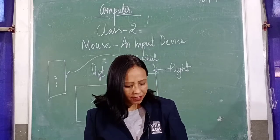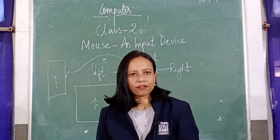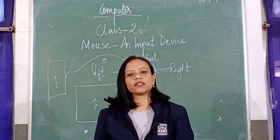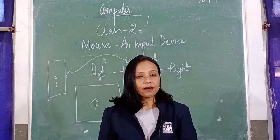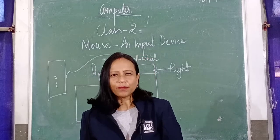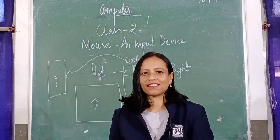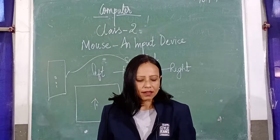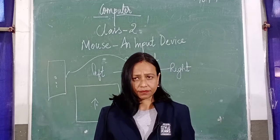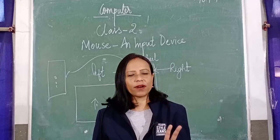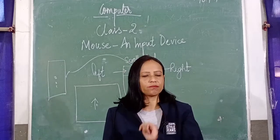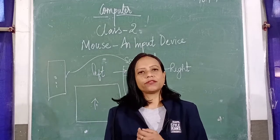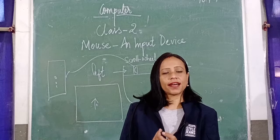Our chapter number 5 topic is the mouse. Children, I believe you all know what a mouse is. It is an input device. So what is a mouse? It is a computer mouse. We are going to learn about a computer mouse. There are two kinds of mouse — one is a real mouse and one is your computer mouse. Here we are going to learn about the computer mouse, and we call it an input device.